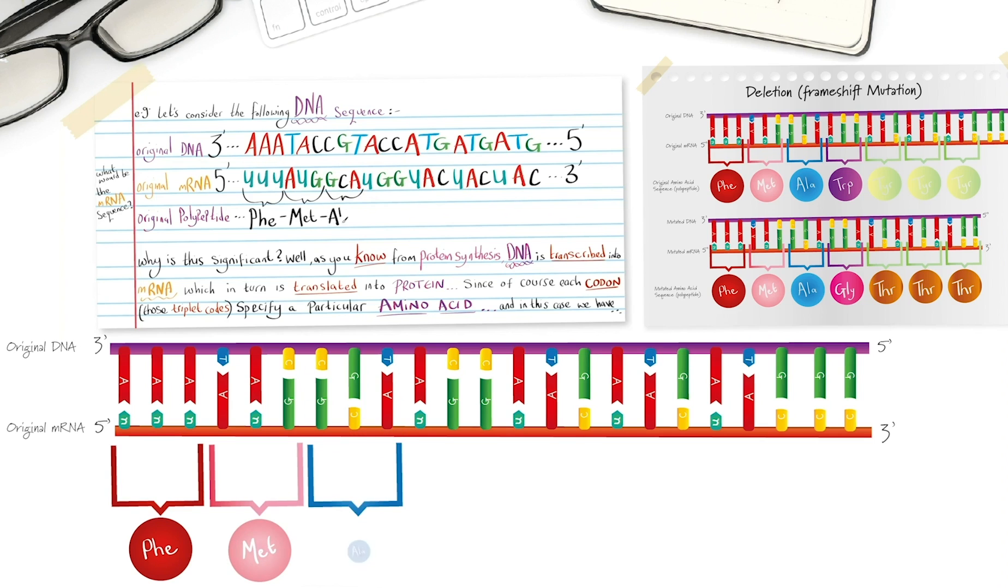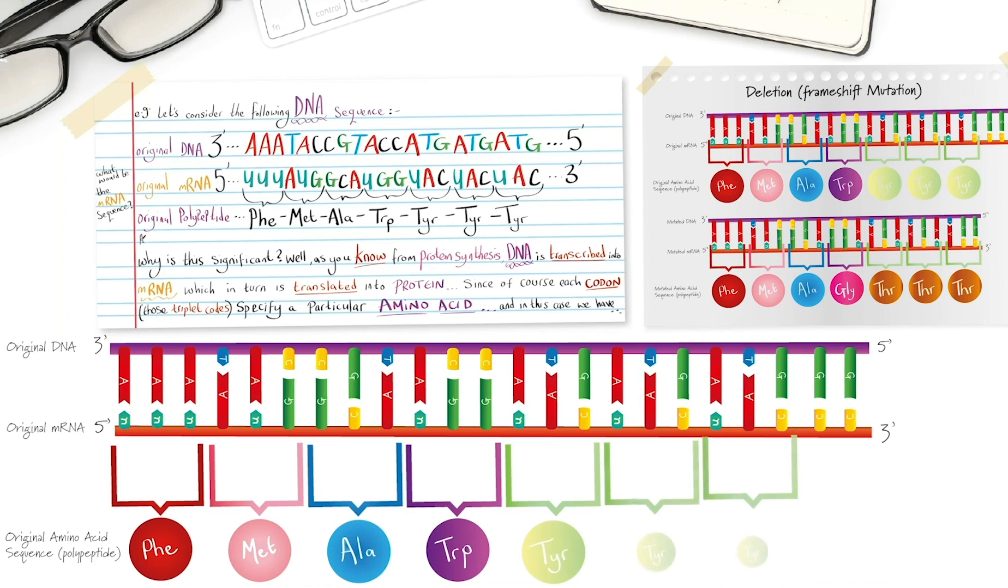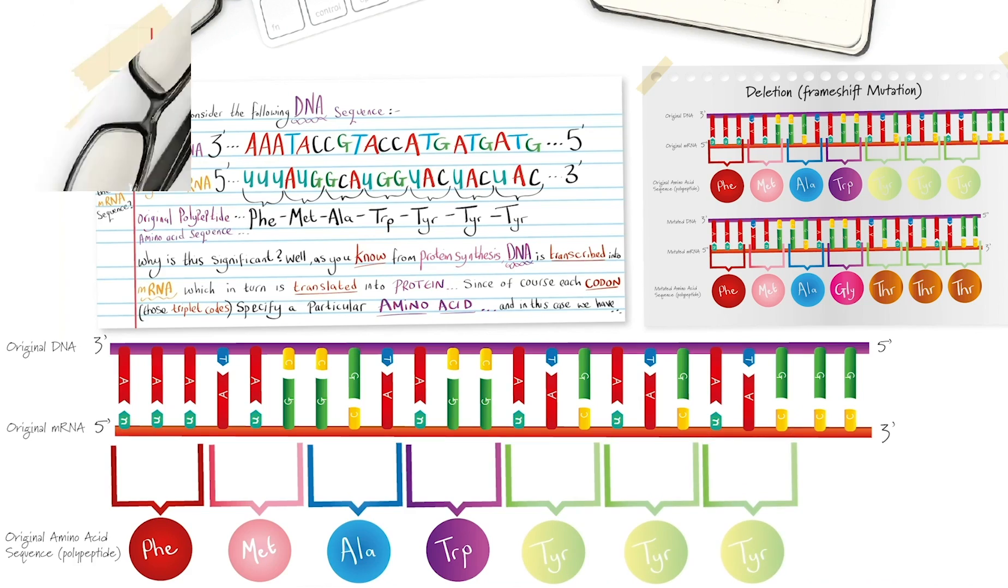GCA will code for alanine and UGG codes for tryptophan. And the final three amino acids in the sequence are coded for by UAC and they are tyrosine, to give us this particular amino acid sequence.